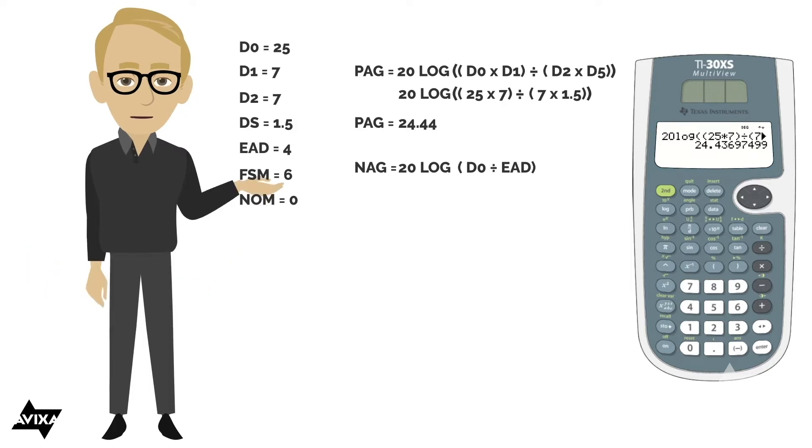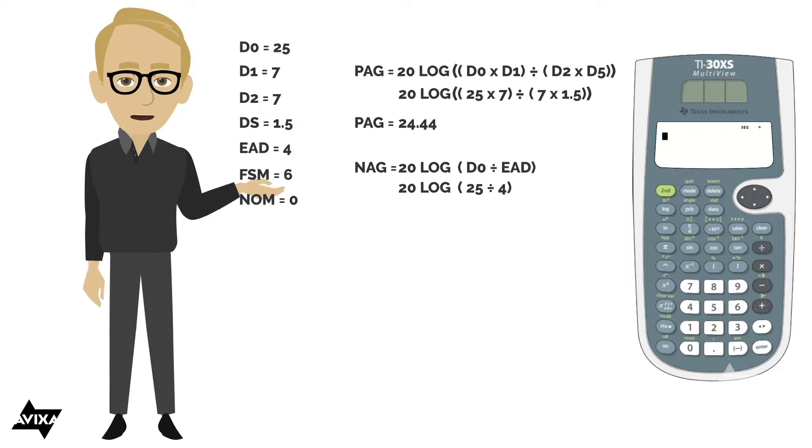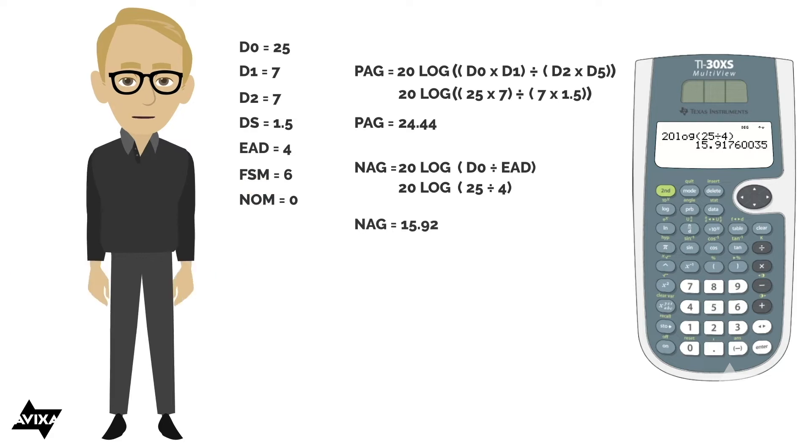Let's see what we get on the NAG side. We have 20 times the log of D0, and it's going to be the same D0 that we used a moment ago. And the EAD, equivalent acoustic distance, is going to be 4. So 20 times the log of 25 divided by 4. Let's see what we get. 20 log 25 divided by 4, close the paren, and rounded here, 15.92. So NAG equals 15.92.